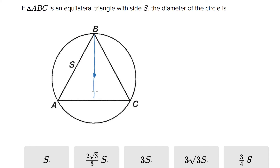First I'm going to draw a couple of heights on this triangle that go through the center. Now this smaller triangle that I've created is a 30-60-90. We know it's equilateral, so this must be 30 degrees, because the other half must be 30, and it must be 60 together, which means this angle must be 60.